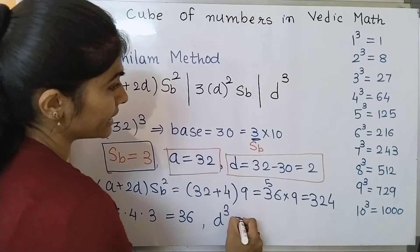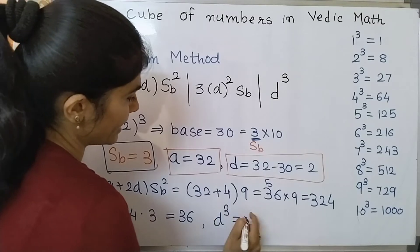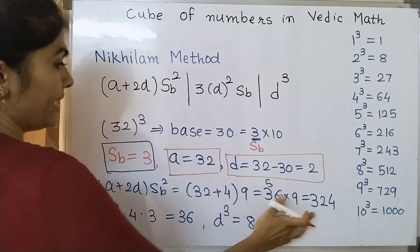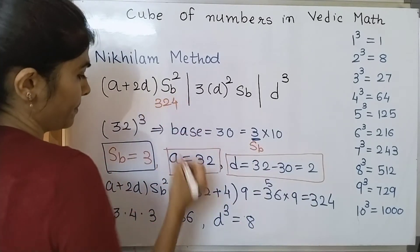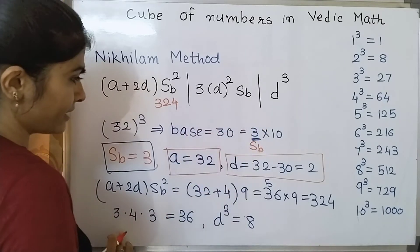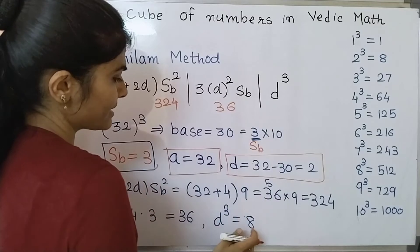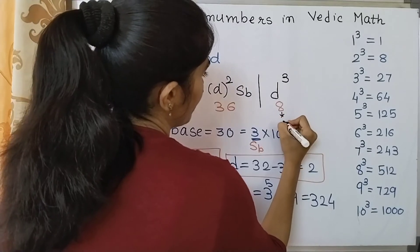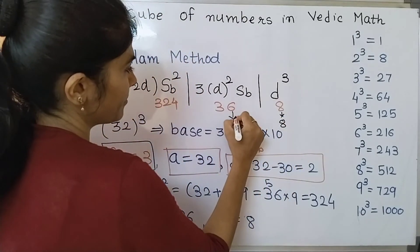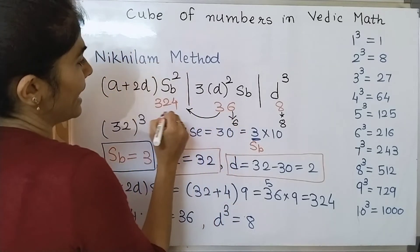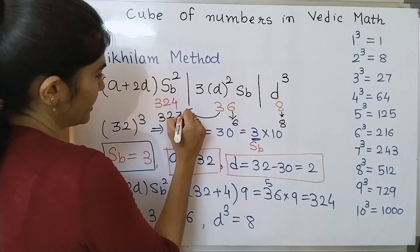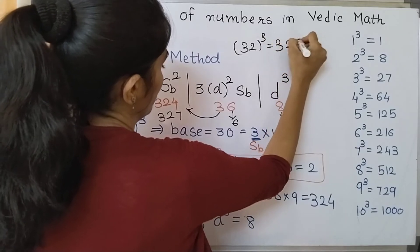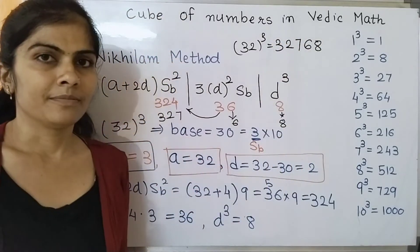So now if I substitute values over here I can say that this term is 324, another term, 3d square term is 36, and last term which is 8. And now last and final step is bring this 8 down no carry, bring this 6 down we will go as carry and if I add 3 to this it will become 327. So I can say that cube of 32 is 32768.